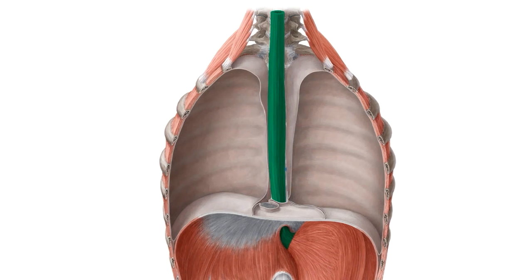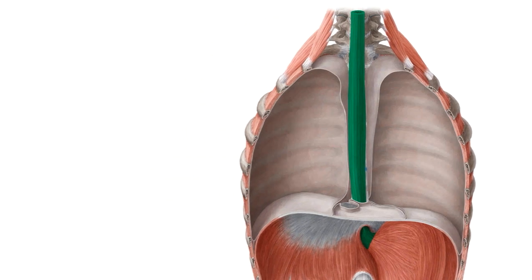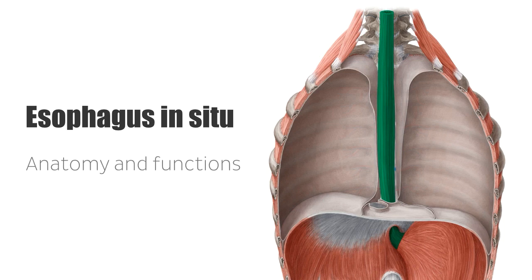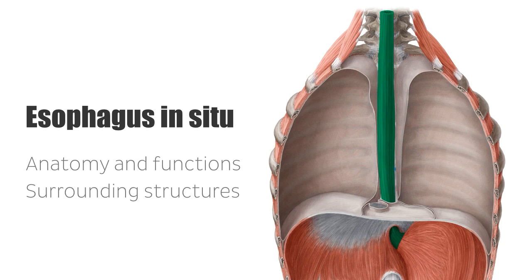On the first part of this tutorial we're going to be talking about the anatomy and functions of the esophagus, whereas on the second part we're going to be focusing on the surrounding elements — the different neighboring structures found around the esophagus.